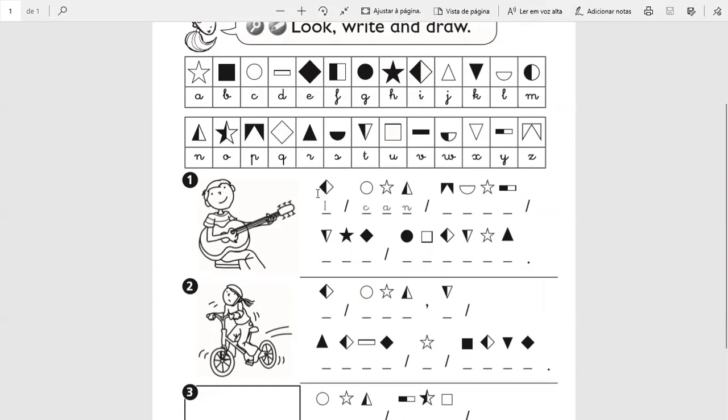In this case, for example, it's I, and this one is a C, this one is an A, and this one is an N. This means 'I can,' right? And you have to finish this.